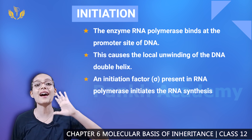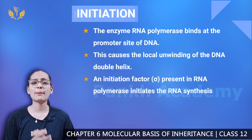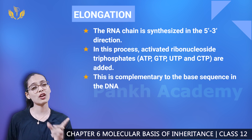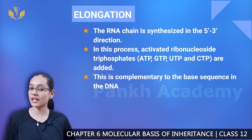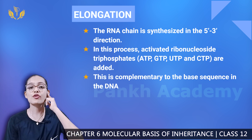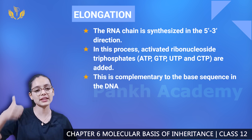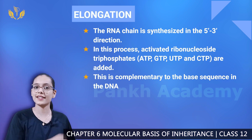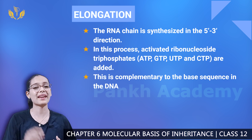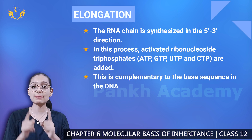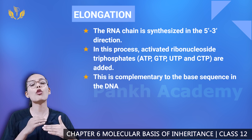The RNA polymerase initiates RNA synthesis, and the RNA chain is synthesized in the 5' to 3' direction. During elongation, activated ribonucleoside triphosphates — ATP, GTP, UTP, and CTP — are added complementary to the base sequence in the DNA template.